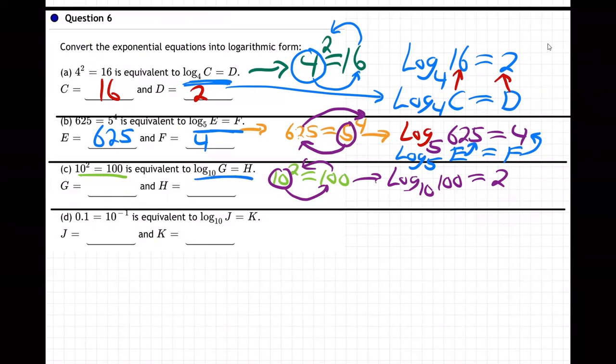There we go. And then they want us to compare that with log base 10 of G equals H. So then G is clearly 100. H is 2. G is 100. H is 2. All right, one more.